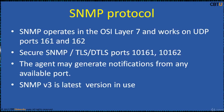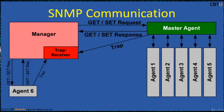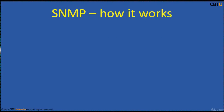The agent generates notifications from any available port. When used with TLS or DTLS, i.e. Transport Layer Security and Datagram Transport Layer Security, requests are received on port 10161 and traps are sent to port 10162. In SNMP communication, one or more administrative computers are called managers. They monitor and manage a group of hosts or devices.